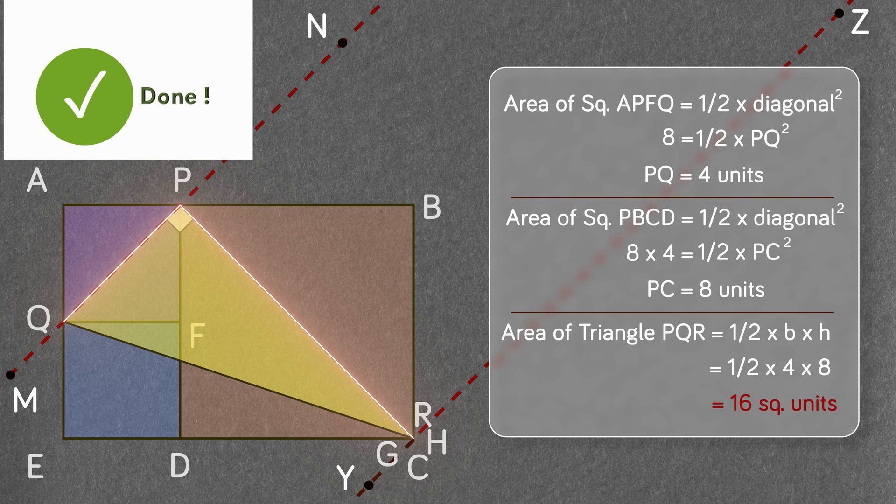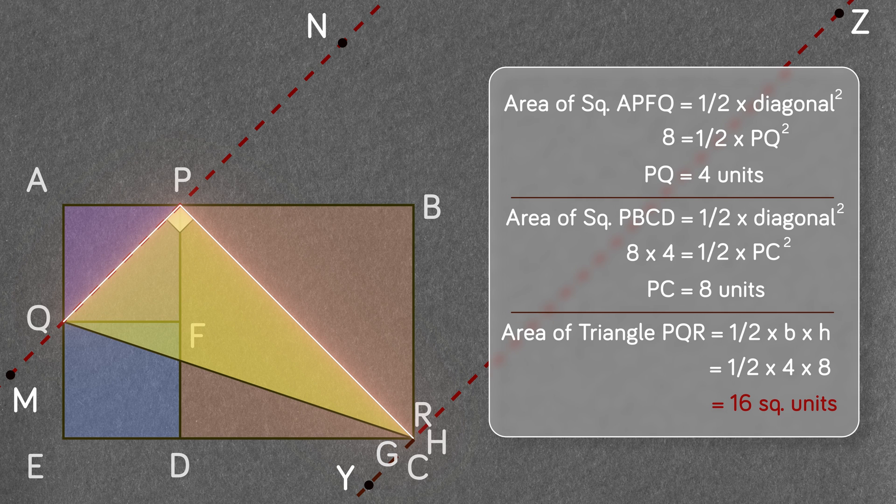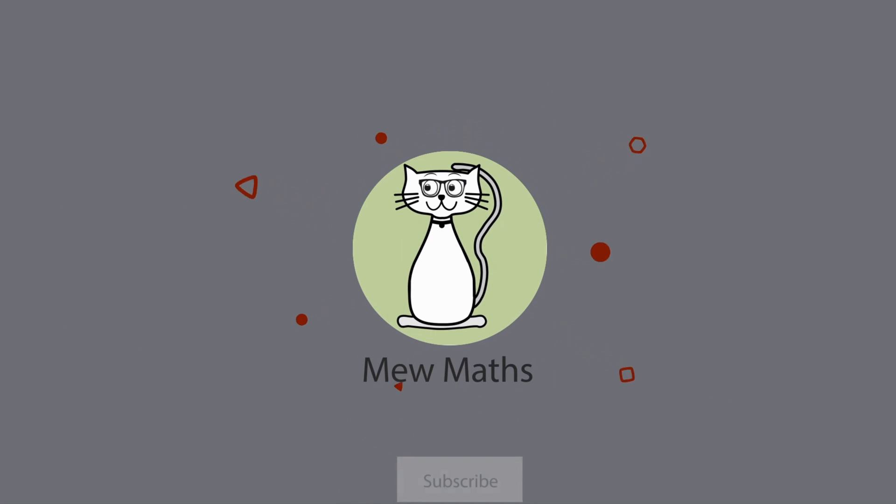So, we found out that the area of the triangle PQR will be twice the area of a small square on the left. Like and subscribe for more interesting videos. Do not forget to share with your friends and family.